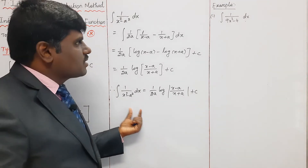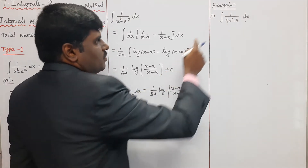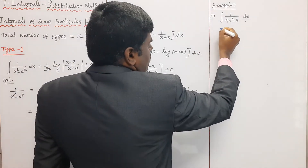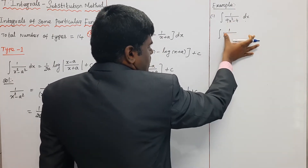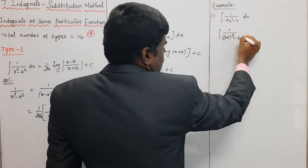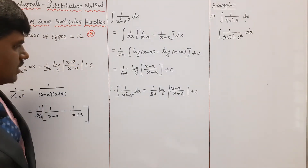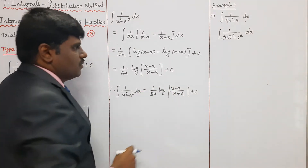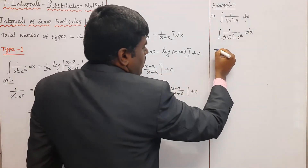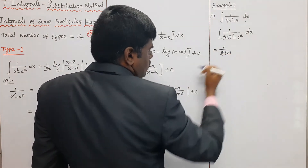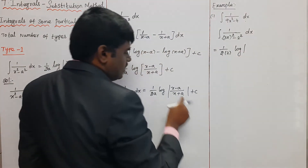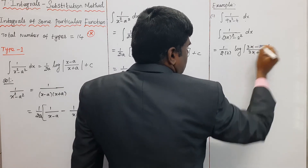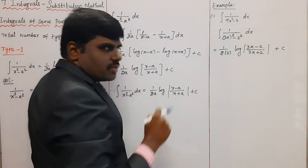Now applying this formula to an example: integration of 1/(9x² - 4) dx. I rewrite this as integration of 1/[(3x)² - 2²] dx. Using the formula with x replaced by 3x and a equal to 2: (1/2a) = (1/4), and the answer is (1/4) log|(3x - 2)/(3x + 2)| + C.